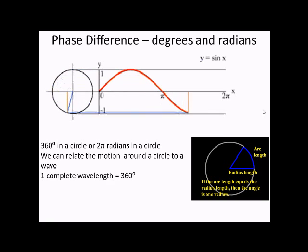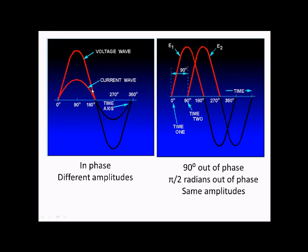We can think about the wave traveling as something called a phasor. Two examples here: two waves both in phase, obviously with different amplitudes, whereas in this one we've got two waves that are 90 degrees out of phase, or pi over two radians.